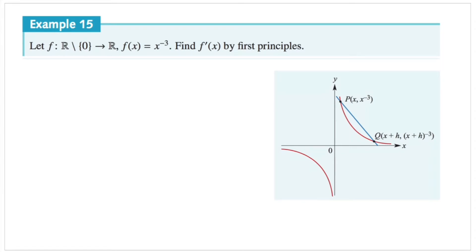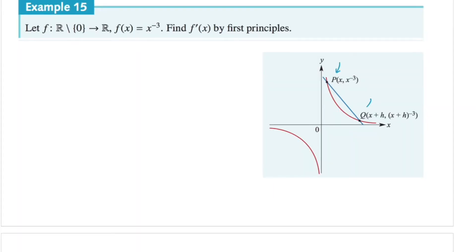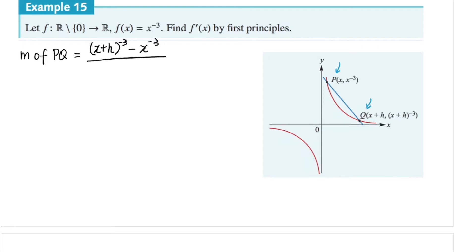Before, we used the first principle to obtain the derivative function when the powers were positive integers. Now let's use the first principle again and find the derivative when the power is a negative integer. There are two examples in the textbook — I chose the second one as they're essentially the same in terms of method. We have two points on our curve, P and Q, and we're finding the gradient of the secant line PQ. The gradient is rise over run: x plus h to the power of negative three, minus x to the power of negative three, all over h.